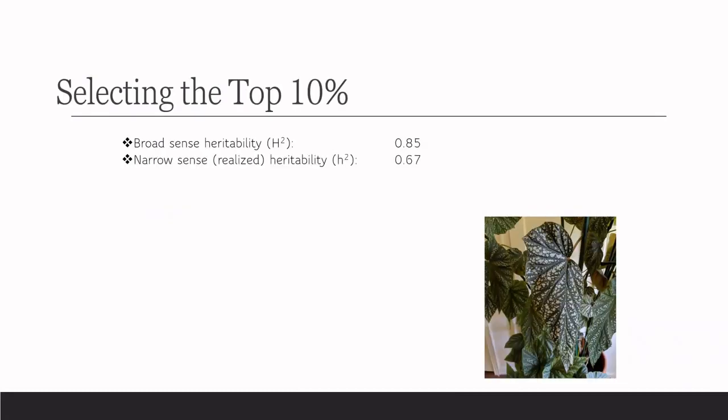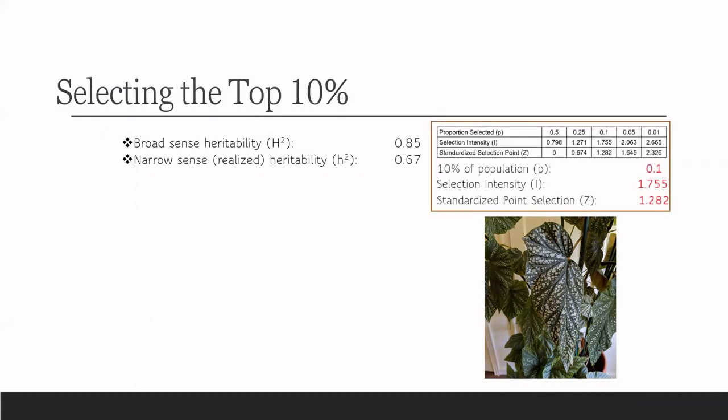Okay, so what we're going to be doing is selecting the top 10% of our population. Using the table over here, we can see that our p-value is going to be 0.01. That means our i-value, the selection intensity, is going to be 1.755. And our standardized point selection, z, is going to be 1.282.